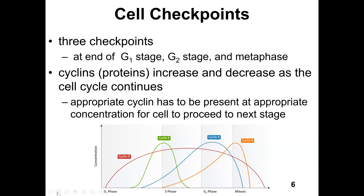During the cell cycle — throughout interphase and mitosis — there are three checkpoints the cell goes through: in G1, in G2, and in metaphase. At these checkpoints, proteins called cyclins check to make sure the cell is ready to go to the next stage. Cyclins work with another protein called CDK, cyclin-dependent kinase.